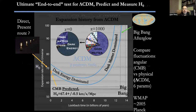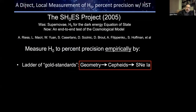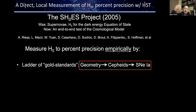A powerful test is to directly measure by definition the expansion rate of the universe. I'm going to talk about the SHOES project, started about 15 years ago, whose goal was to reach percent-level precision in local measurements of the Hubble constant. The approach uses what's called a distance ladder of gold-standard tools: basic geometry to calibrate the luminosity of Cepheid variables, which are then used to calibrate Type Ia supernovae, which can be seen much further out.